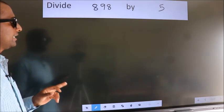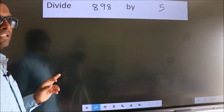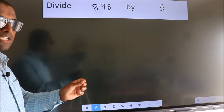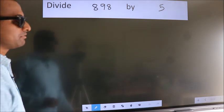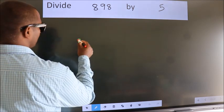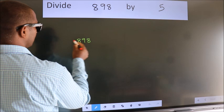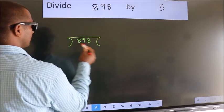Divide 898 by 5. To do this division, we should frame it in this way. 898 here, 5 here.